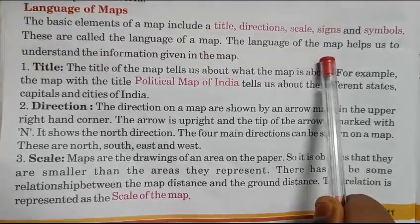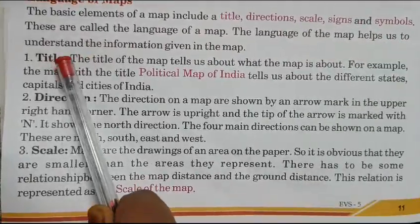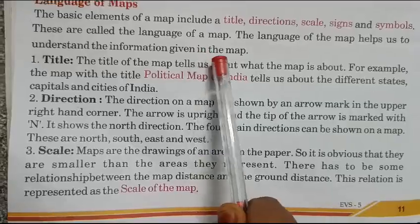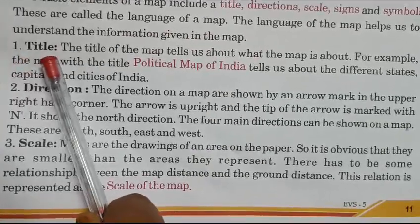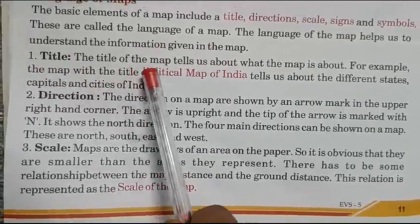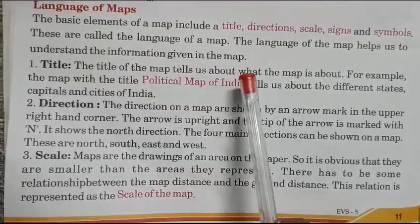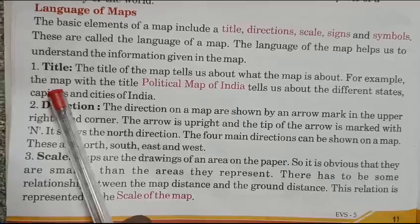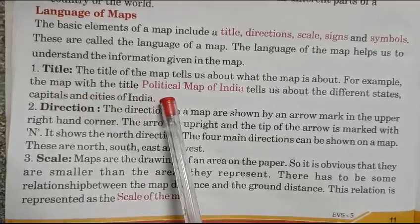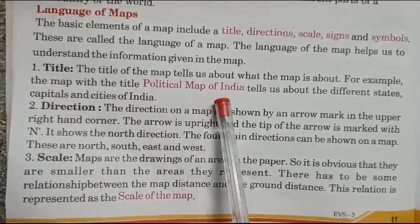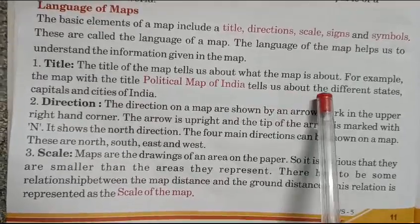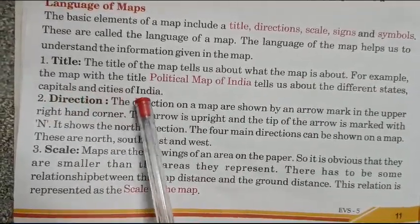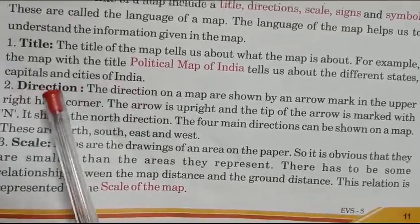The language of the map helps us to understand the information given in the map. 1. Title. The title of the map tells us about what the map is about. For example, the map with the title Political Map of India tells us about different states, capitals and cities of India.